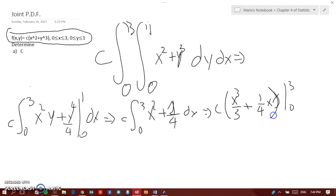And that would be C times 9 plus 3/4, and I will equal to 1 because the probability of everything is equal to 1. And that would be 39 over 4 C equals to 1, so C will equal to 4 over 39.